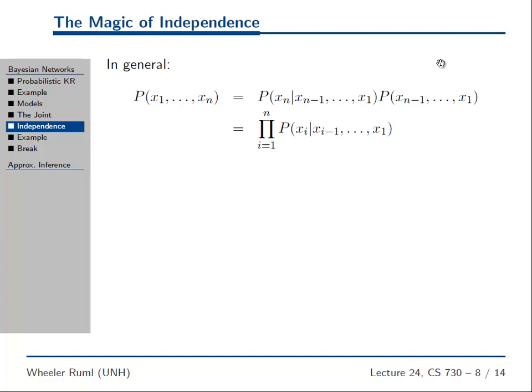So eventually, we'll end up with the probability of x1, and there's nothing more to condition on. So if we knew all these conditional probabilities, that life would be good, because we could then compute the probability of this joint thing.